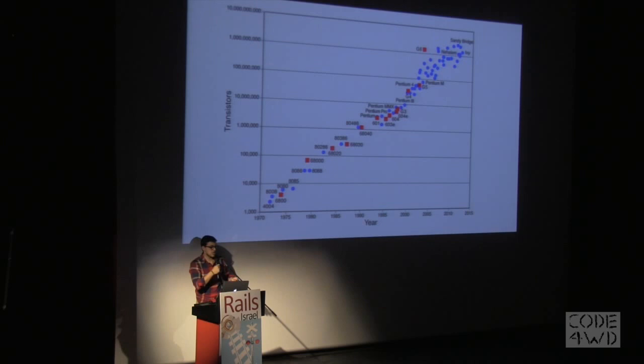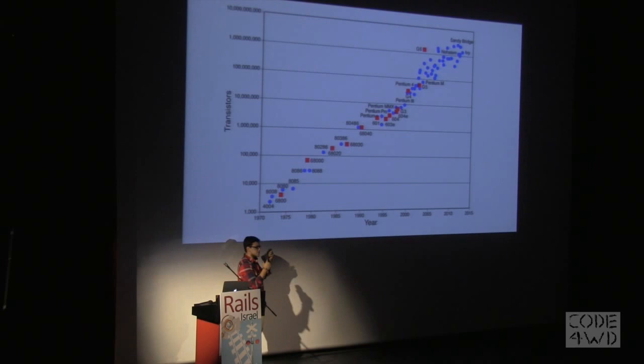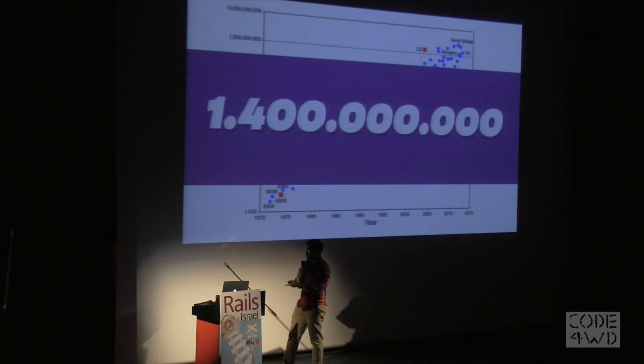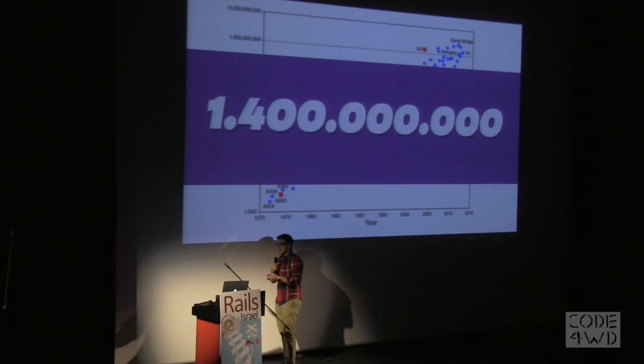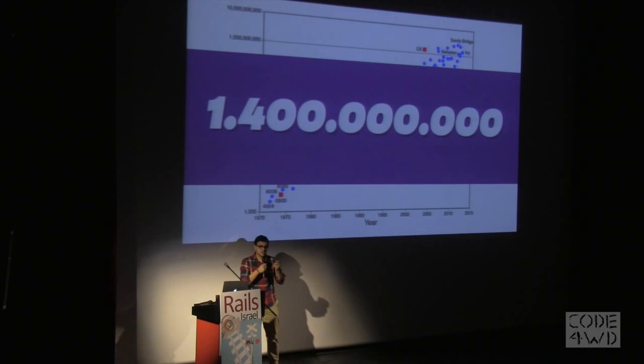If you check Moore's Law, it's really stroking us again and again, doubling our processing power every two years, and it's really awesome. For example, if you check my MacBook that I have here, I have 1,400,000,000 transistors on it, which is awesome. You would never imagine that just five years ago. And most impressive than that is not only the number of transistors we have, but the space that they are compacted in.